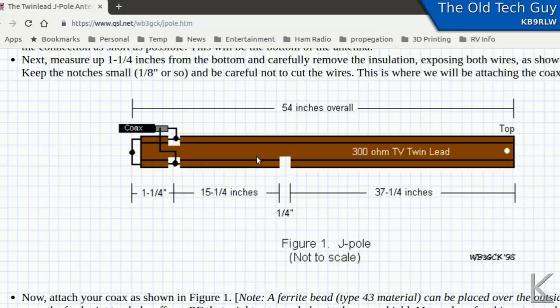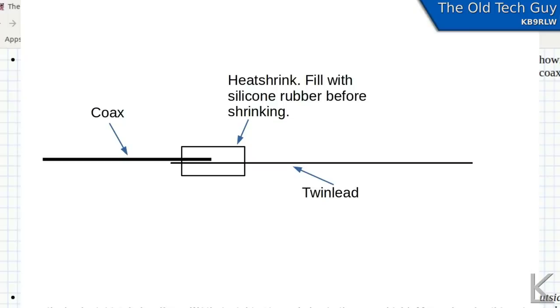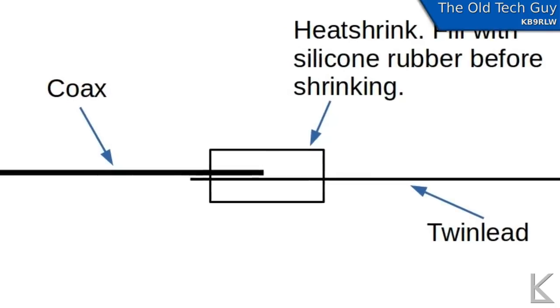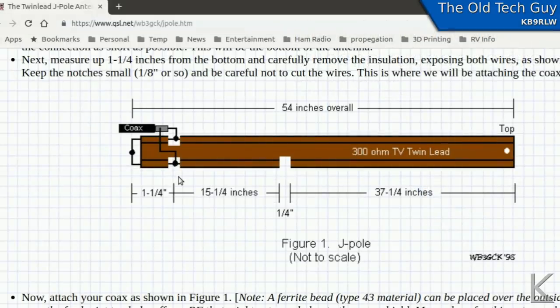Once you've got it tuned where you want it to be, you're going to want some kind of strain relief on this coax. You don't want it hanging on its solder connections. What I did on mine, and this seems to work pretty well, is I slid a big piece of heat shrink down over it and over the end where the coax is connected. And then I shot some silicone rubber inside of that heat shrink to surround this whole area where the connection is. And I let that cure overnight. And then I applied some heat to the heat shrink tubing to kind of compress it down over that joint. That does a couple of things. It provides good strain relief for the coax so that you're not going to pull those solder connections loose.